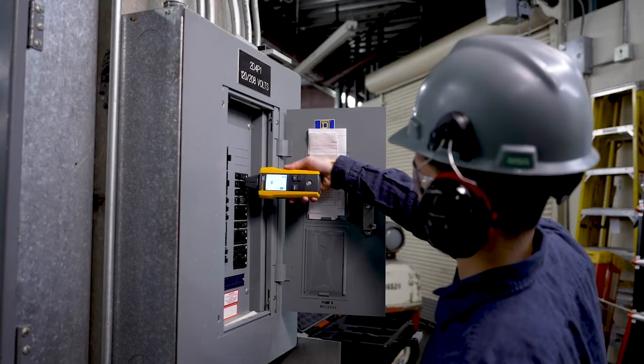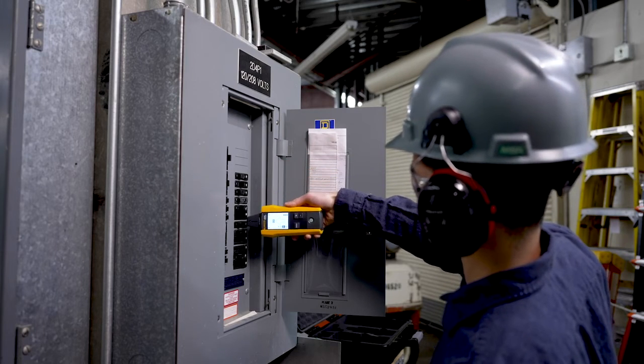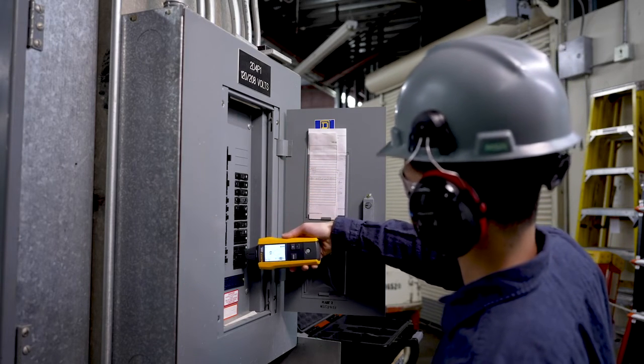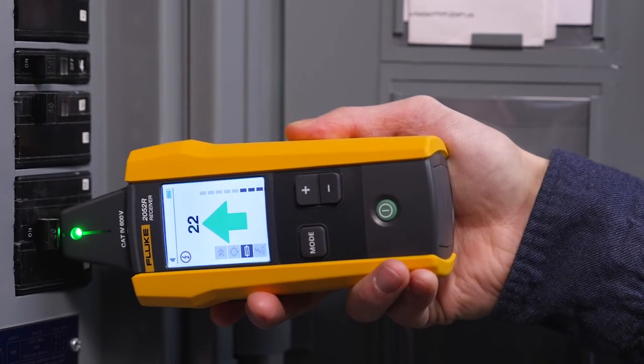Using the 2052 or 2062 Advanced Wire Tracer, you can also find breaks or shorts and opens in wires, even identify the right breaker.